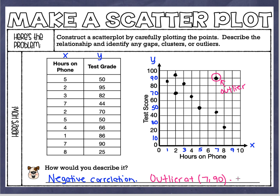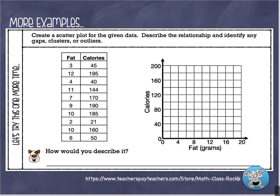How easy was that? All we had to do was plot a bunch of points on a scatterplot and then talk about what we saw. Now let's look at the one on the bottom of the page. This time we've got another set of data — the relationship between fat content and calories. Fat is going to be our x value and calories are going to be the y value. Across the bottom the x-axis shows fat in grams, and up the side we've got calories as the y value.